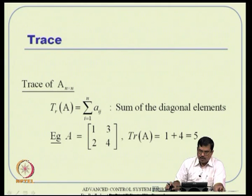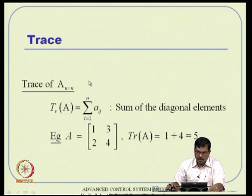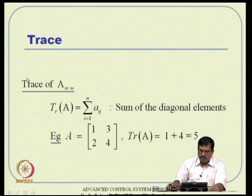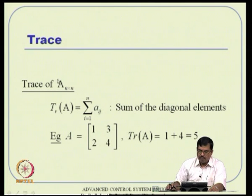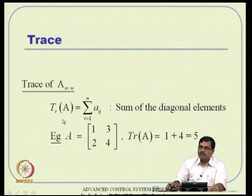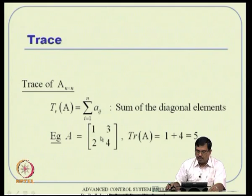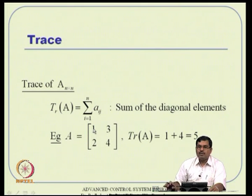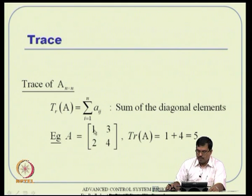There is another concept called the trace operator. The trace of a square matrix is simply the sum of the diagonal elements — just algebraic addition, no absolute values. For example, for the matrix [1, 3; 2, 4], the trace is 1 + 4 = 5.